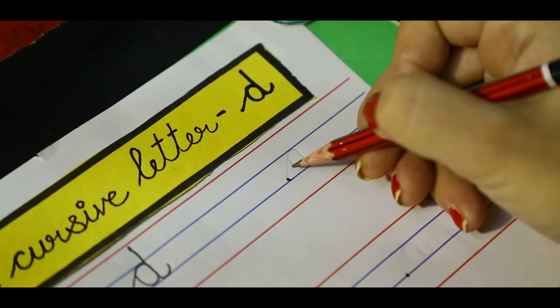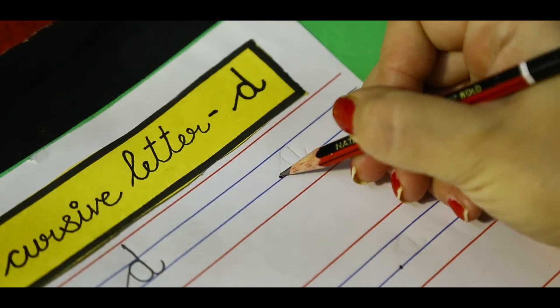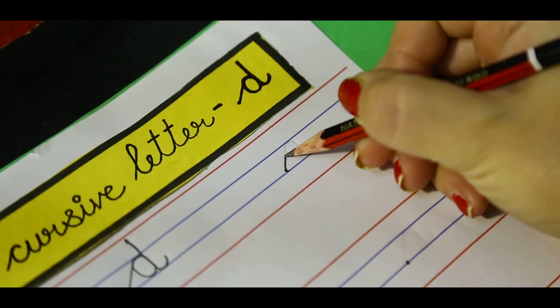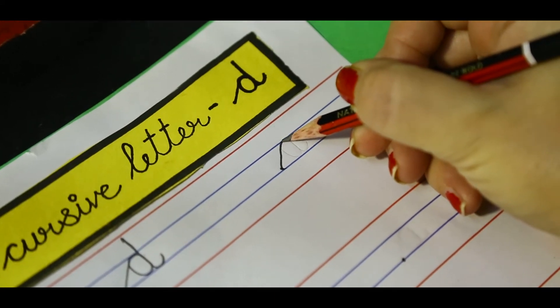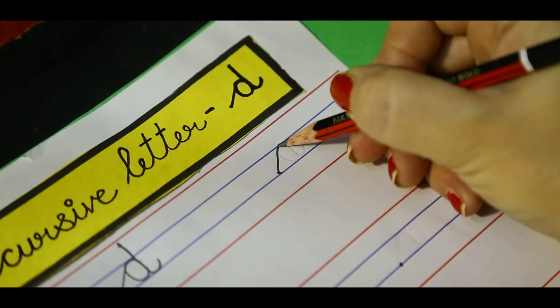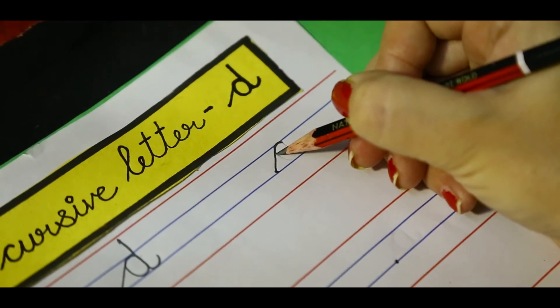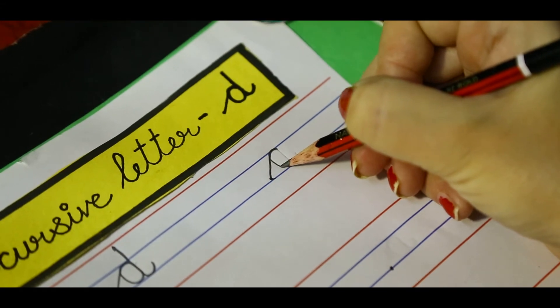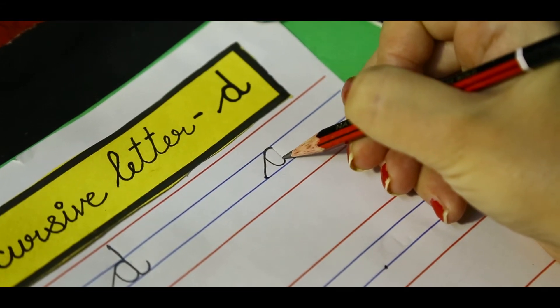One more time. Get your pencil ready on the dot. Go up, up, up, little curl. Without lifting the pencil, go back. Go back to the blue line. Close the mouth.